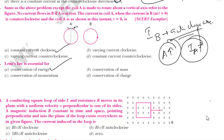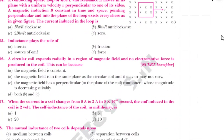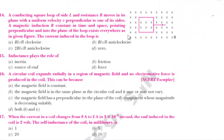Next question: A conducting square loop of side L and resistance R moves in its plane with uniform velocity V perpendicular to one of its sides. The magnetic induction B is constant in time and space, pointing perpendicular and into the plane of the loop, existing everywhere as given in the figure. We need to find the current induced in the loop.